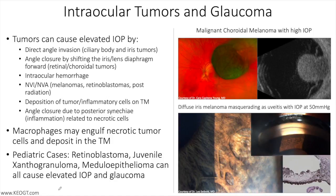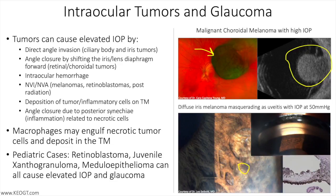There are several pictures on the right-hand side illustrating different tumors associated with elevated intraocular pressure. Choroidal melanomas can cause elevated IOP through multiple mechanisms, including release of pigmented cells and mass effect pushing the lens-iris diaphragm forward. An ultrasound shows the mushroom-like appearance of a choroidal melanoma. Also shown is an iris melanoma masquerading as uveitis with IOP in the 50s, demonstrating depigmentation and increased pigmentation of the angle. Histologically, seeding of the iris and trabecular meshwork with darkly pigmented cells can be seen.